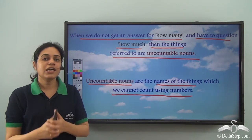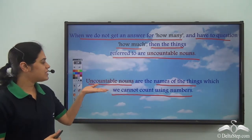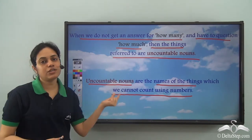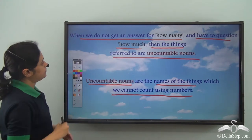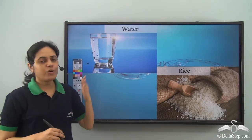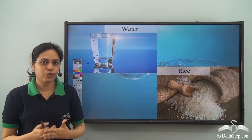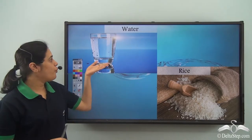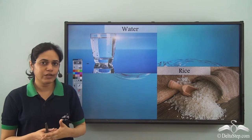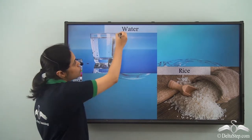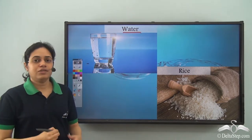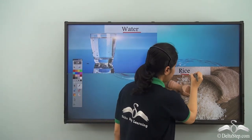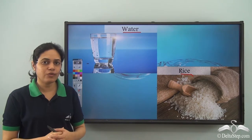We cannot count these, and as the name itself suggests, uncountable means something which we cannot count. What about water? Can you count water? You cannot. If I ask you 'how many water are there,' will you be able to answer? No. So, water is an uncountable noun. Similarly, rice, as we have seen, is an uncountable noun.